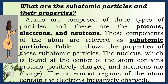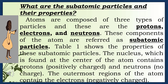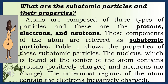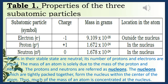These components of the atom are referred to as subatomic particles. Table 1 shows the properties of these subatomic particles. The nucleus, found at the center of the atom, contains protons (positively charged) and neutrons (no charge). The outermost regions of the atom contain the electrons (negatively charged).